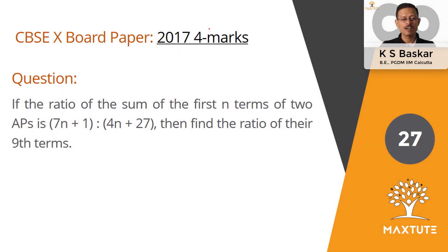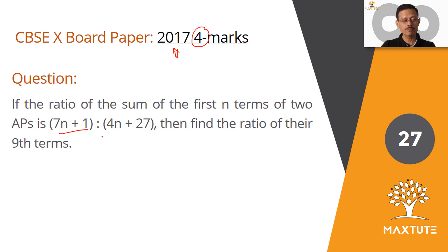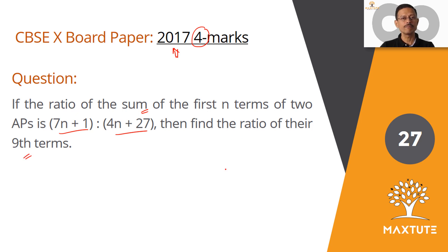An arithmetic progression question appeared as a four-mark question in the 2017 CBSE 10th standard board paper. The question states: if the ratio of the sum of the first n terms of two arithmetic progressions is 7n+1 to 4n+27, what we need to find out is the ratio of their ninth terms.